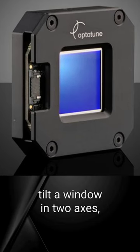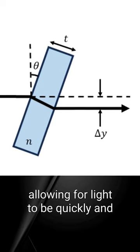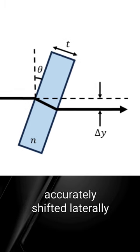Beam shifters from OptiTune tilt a window in two axes, allowing for light to be quickly and accurately shifted laterally.